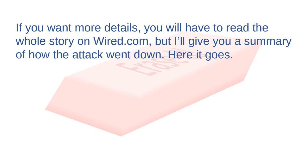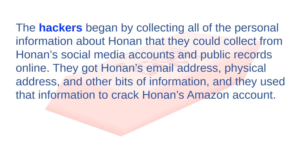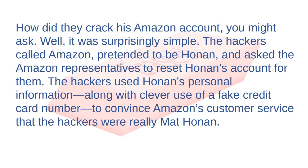Here's a summary of how the attack went down. The hackers began by collecting all the personal information about Honan they could find from his social media accounts and public records available online. They got his email address, physical address, and other bits of information, and used that to crack Honan's Amazon account. They called Amazon, pretended to be Honan, and asked the Amazon representative to reset his account for them.